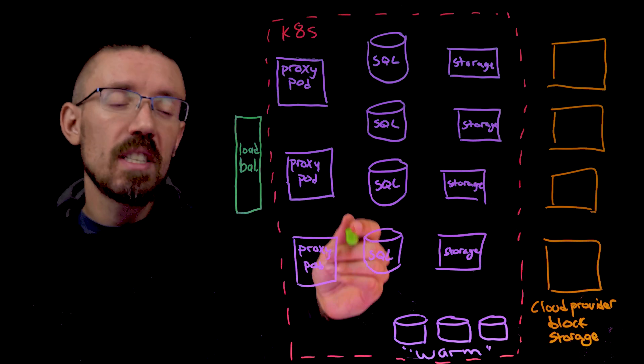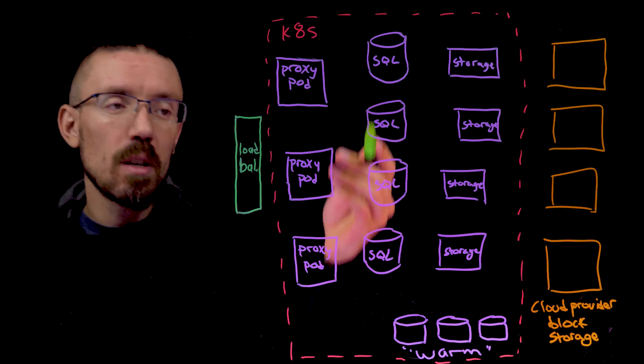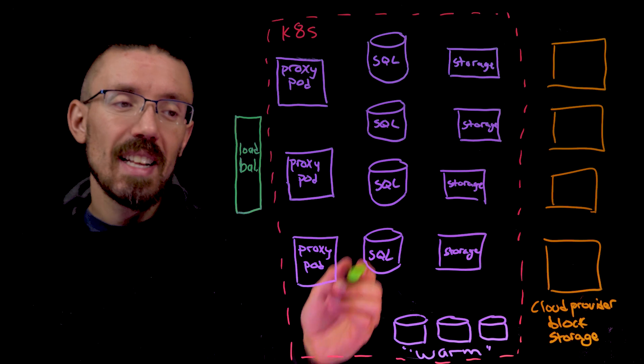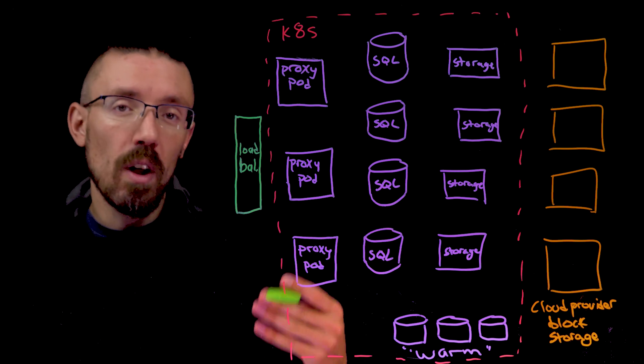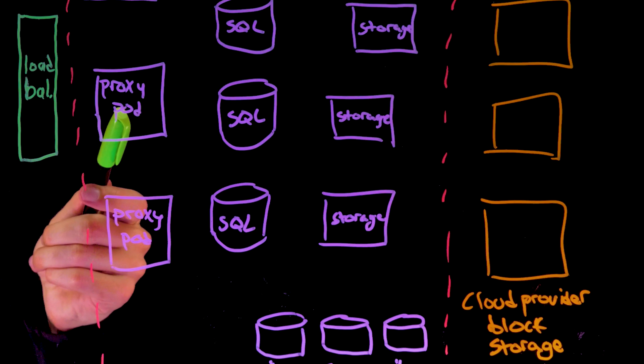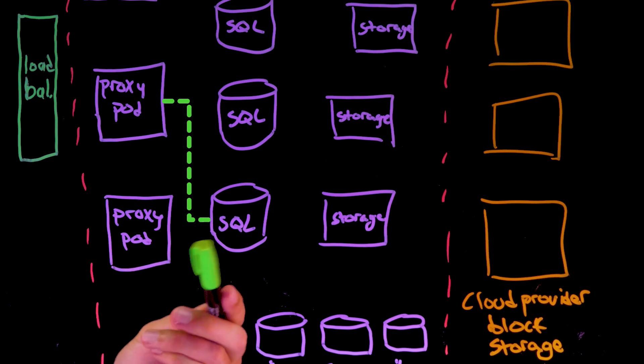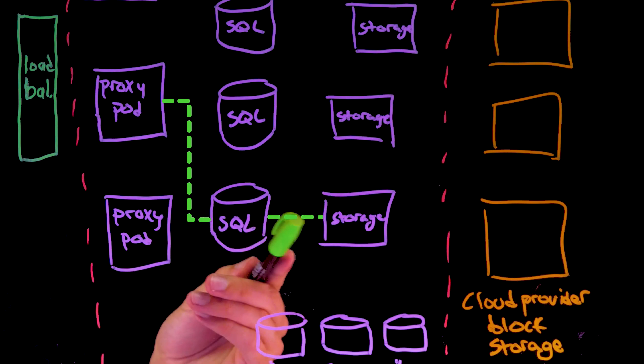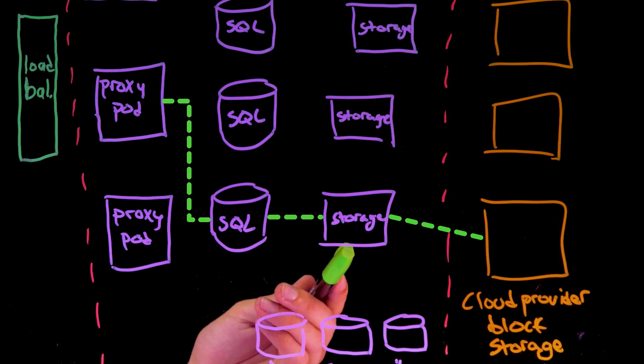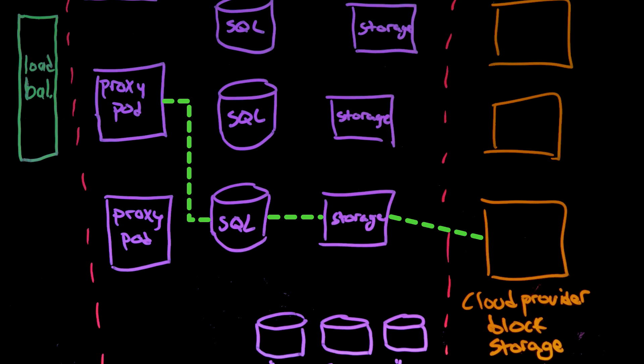For example, in this diagram, we see a few SQL pods, and these might be associated with different tenants. Let's say that these two are yours and you run a query. This proxy pod will route the query to a SQL pod assigned to you, which passes a request on to the storage pod, which then pulls the relevant data from the cloud provider's block storage.